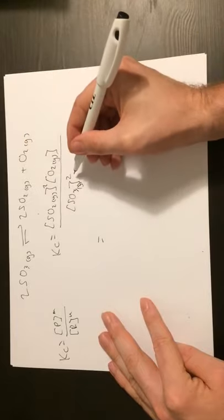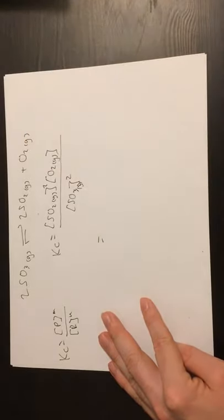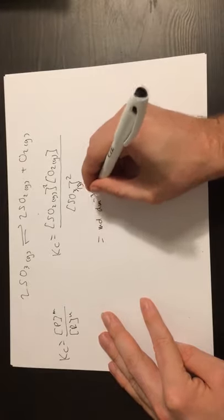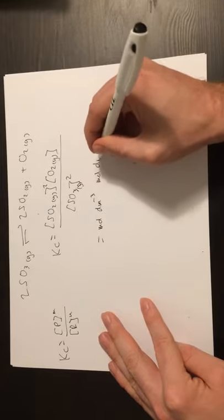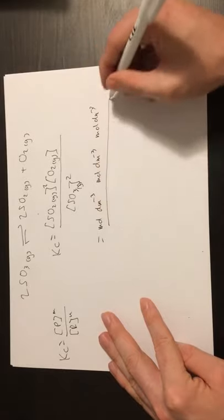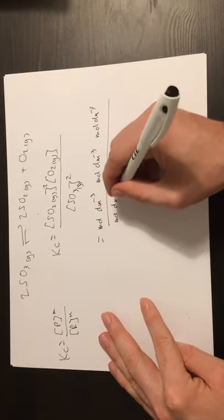and two concentration terms on the bottom. So three terms on the top, two on the bottom. For each of those terms, I'm going to write out moles per decimetre cubed, which of course is the units of concentration. So three on the top and two on the bottom.